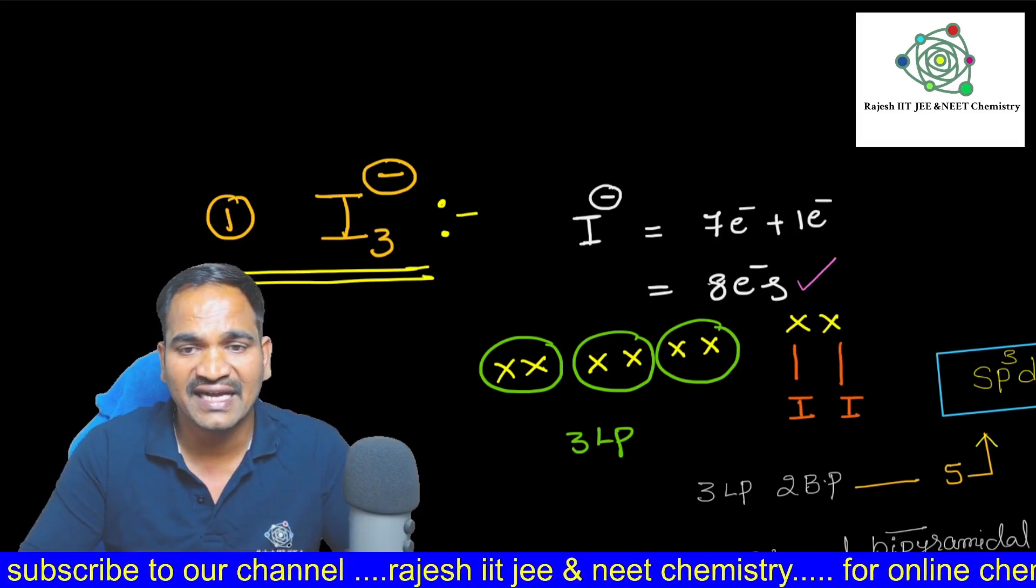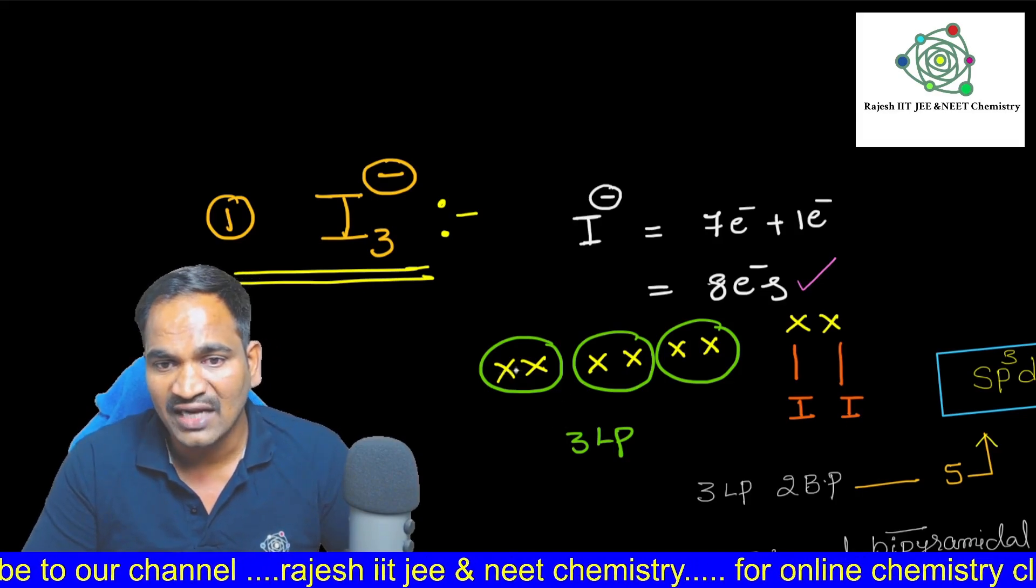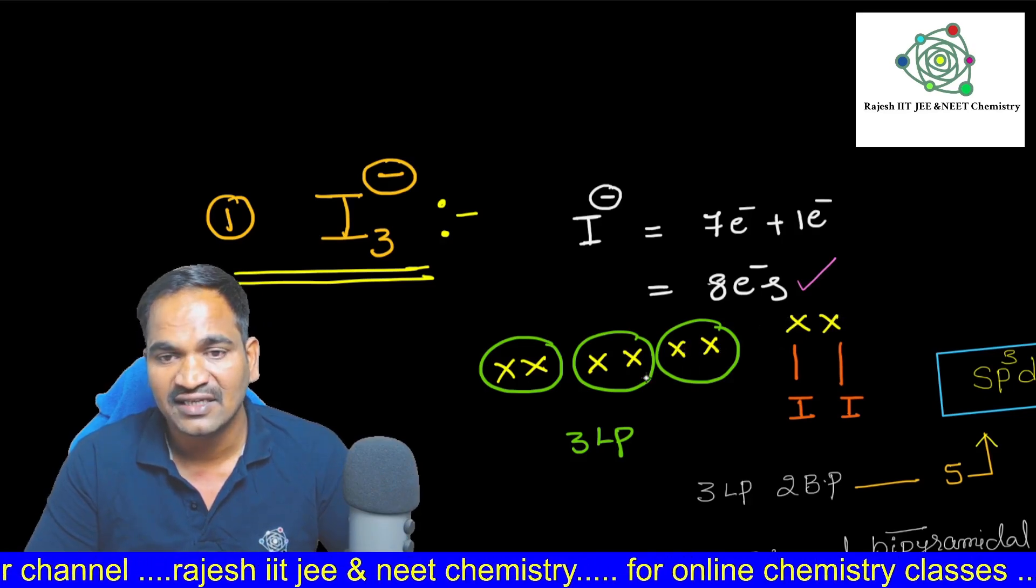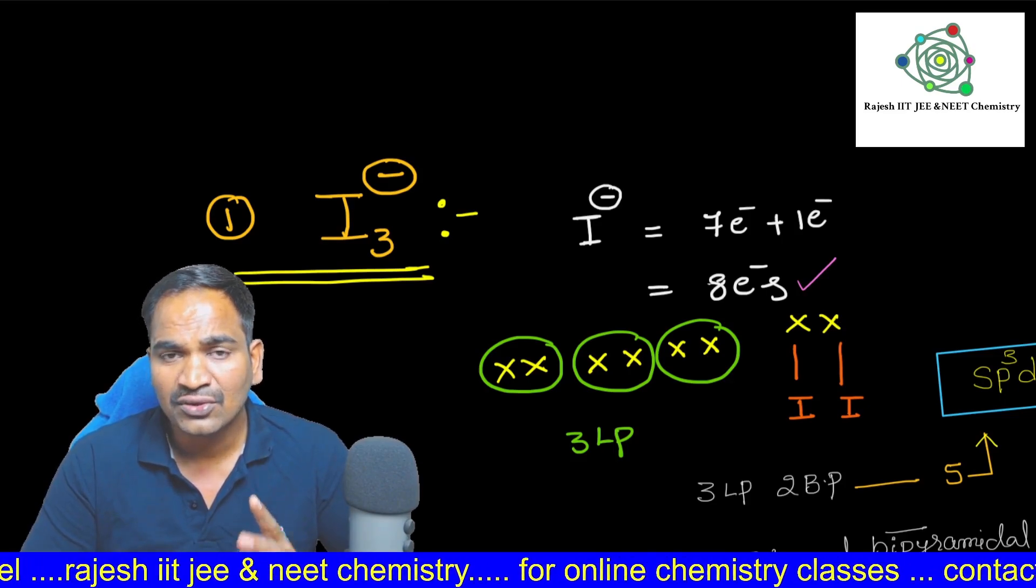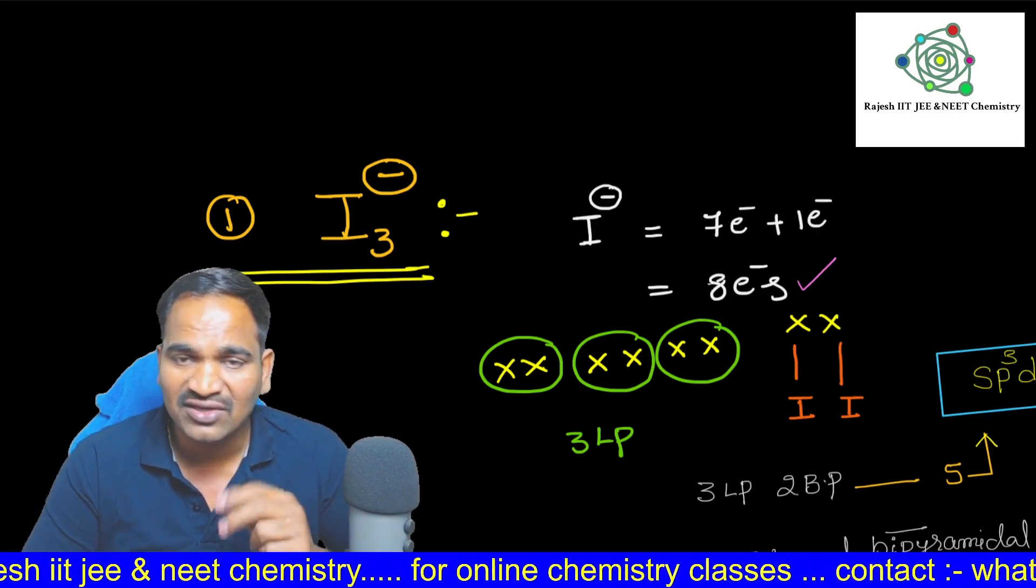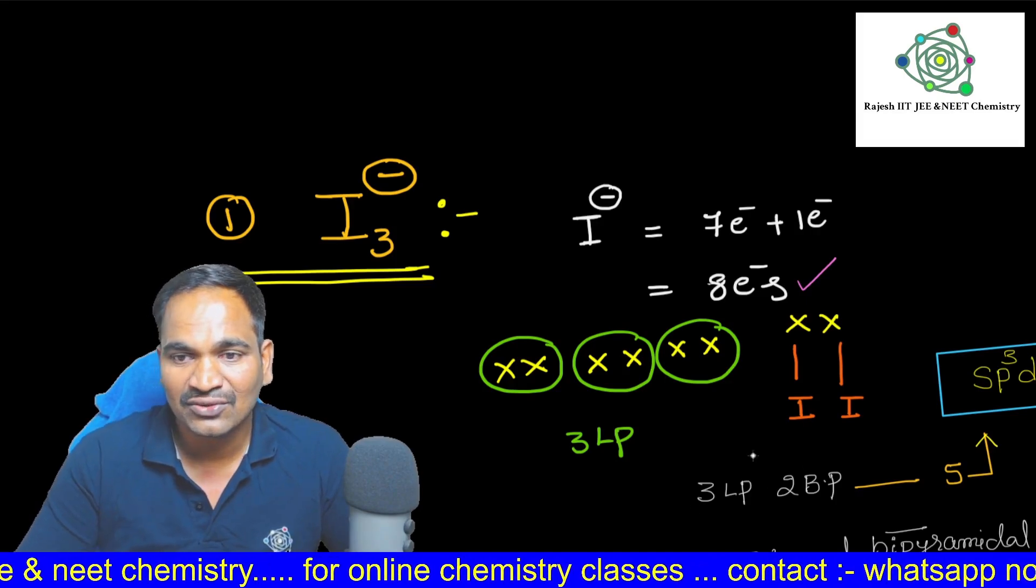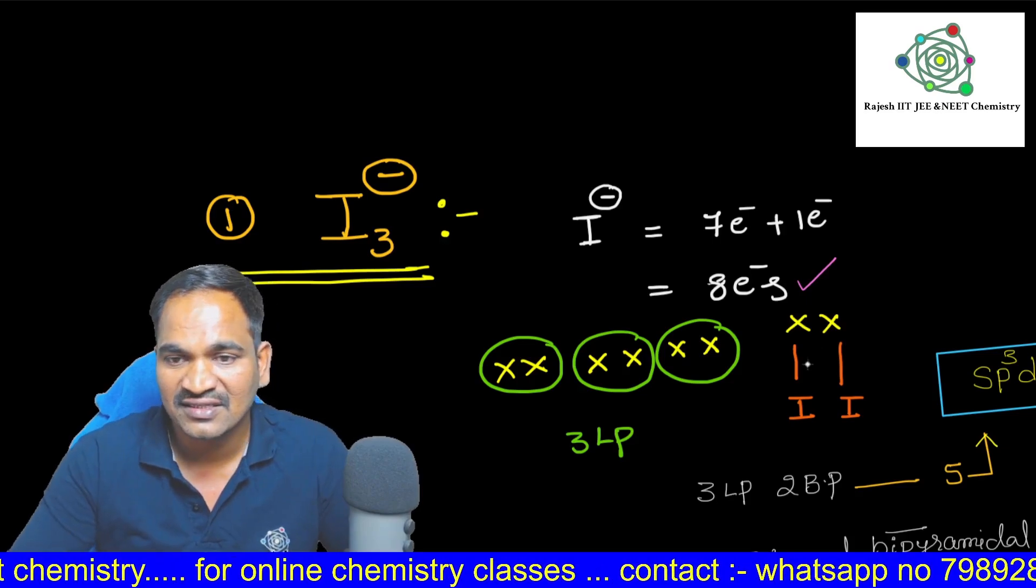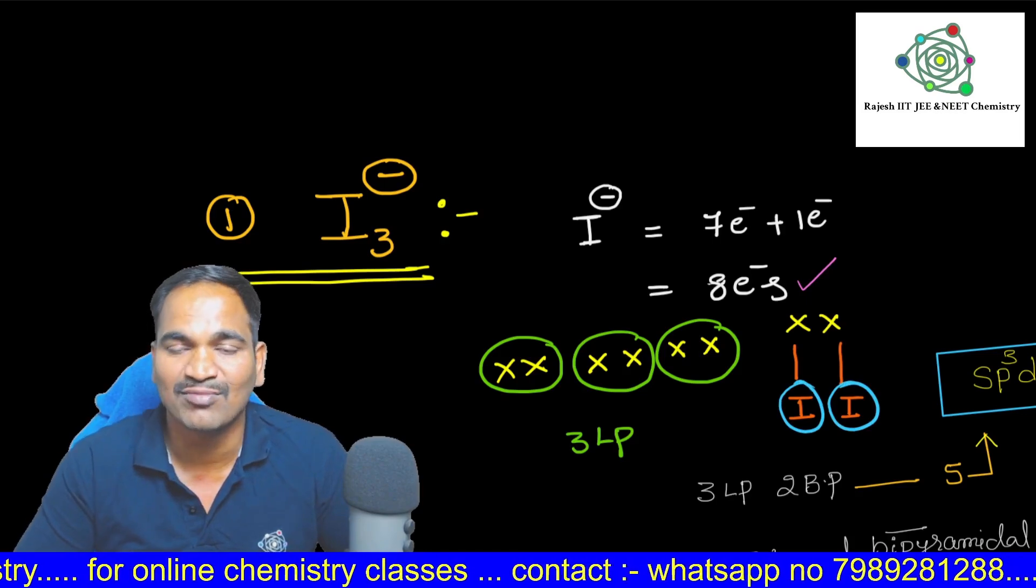Now these eight electrons I wrote here like 1, 2, 3, 4, 5, 6, 7, 8. I wrote 8x here. So out of eight electrons, two electrons are bonded with two iodines. Have you got it? Here one iodine is bonded and here one iodine is bonded.